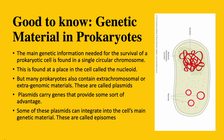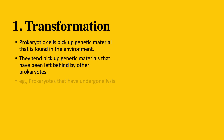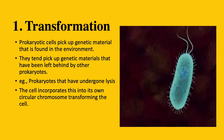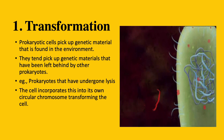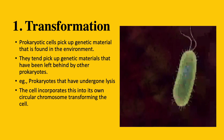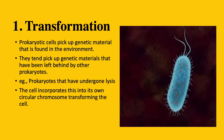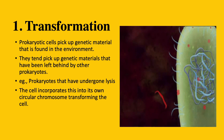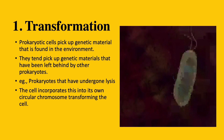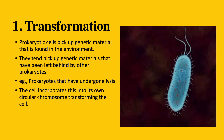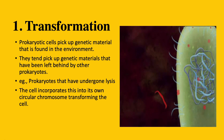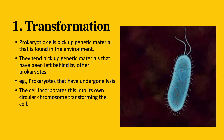Now that we have this information, let's look at the three processes prokaryotes use to increase their genetic diversity. Number one: transformation. During transformation, prokaryotic cells pick up genetic materials found in their environment — usually genetic materials left behind by other prokaryotes. Think about an instance where a bacterial cell lyses and spills out its genetic content to the environment. The cell then incorporates this into its own circular chromosome, transforming the cell.